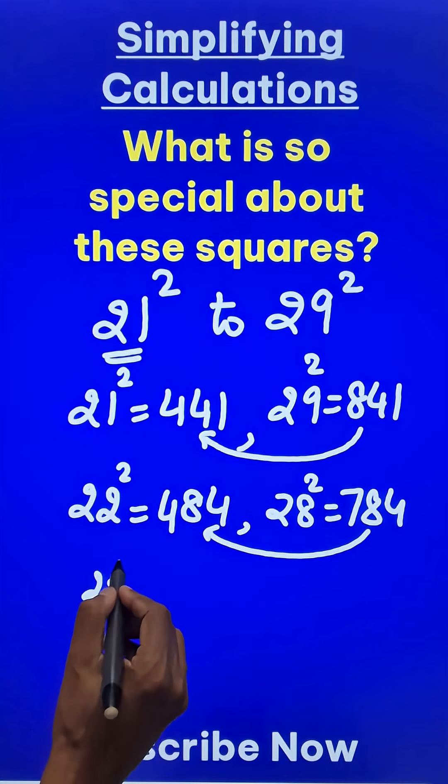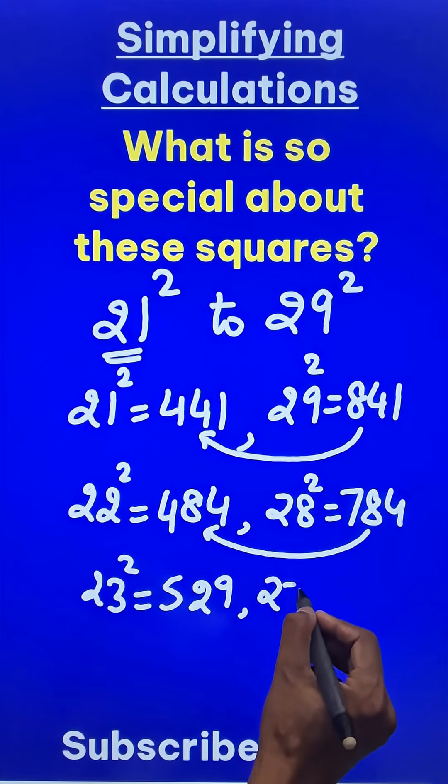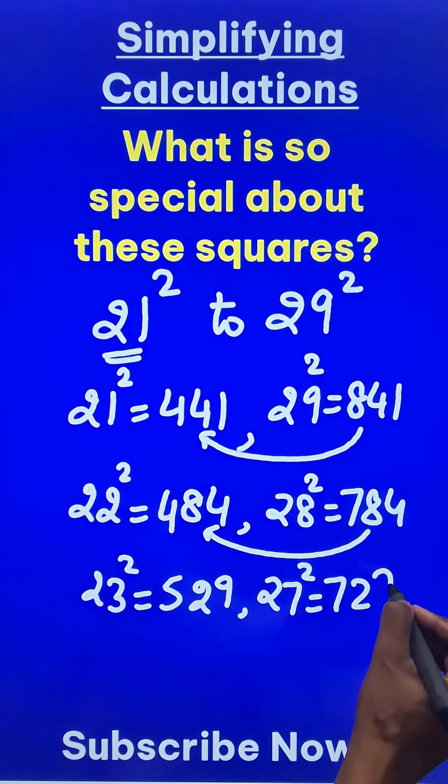Moving on, 23 square is 529, and before 28 we have 27 square, it is 729, and guess what? They are exactly 200 apart.